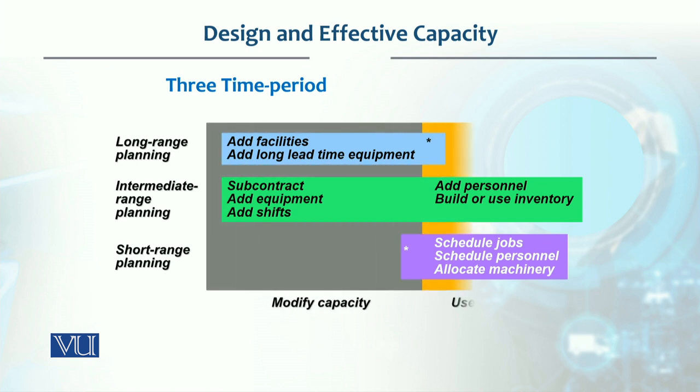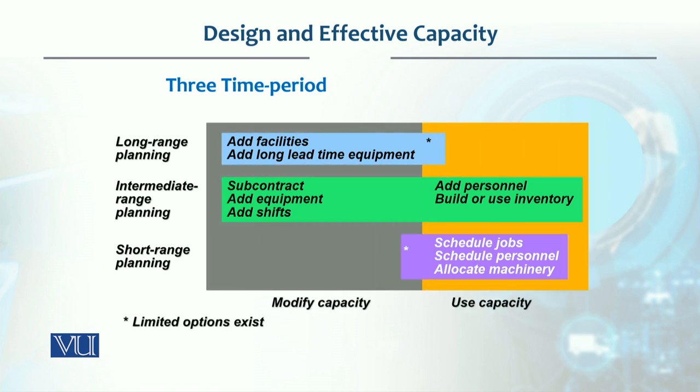We can add a shift — that comes under short-range planning. Jobs and schedules we have made can increase or decrease our short-range capacity utilization, depending upon what product mix we have decided to produce.